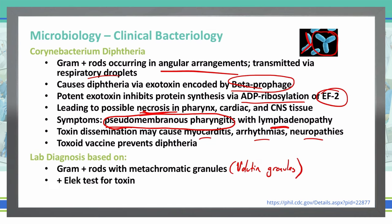Another diagnostic criterion is a positive Elek test, which tests for the toxin. We take a strip of paper containing the antitoxin for diphtheria and place it into the agar just underneath the surface. We then streak the surface with our diphtheria sample, and lines appear on the paper because the antitoxin and the exotoxin react with each other, producing precipitin lines along the filter paper. If we see those lines, that is a positive Elek test for the toxin.